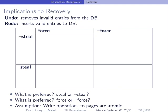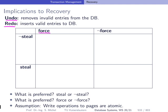Let's look at the different combinations of force/no force and steal/no steal and what they mean for recovery — specifically, whether we need undo and redo. Looking at the 'force, no steal' box: force means we immediately write modified pages back to disk at commit time. For transactions that completed before the crash — the 'winners' — the changes are already persistently stored and durable. So do we need redo? No, we don't need redo in this case.